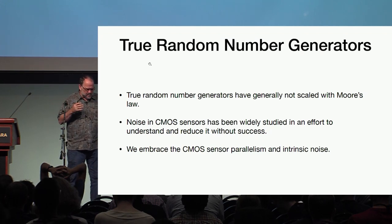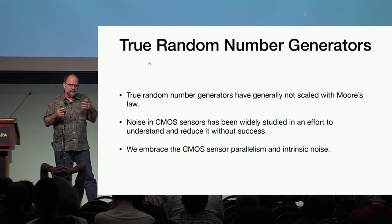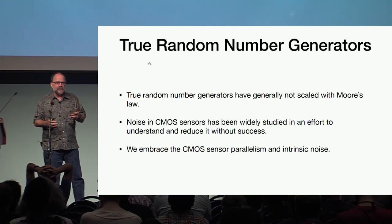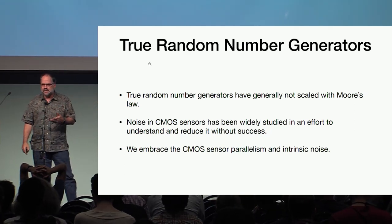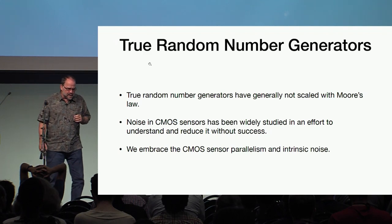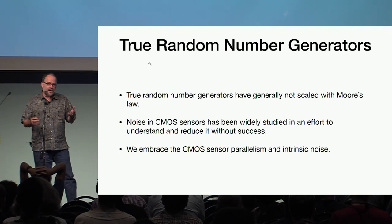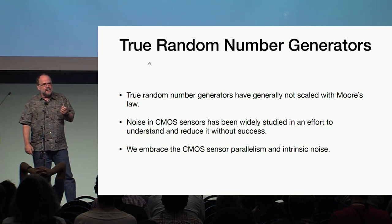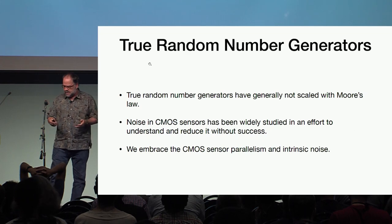We put together the idea of parallelized random number generators with the fact that the noise in CMOS sensors — image sensors like your camera sensors — has been widely studied, and nobody's been able to get rid of it other than cooling it down. So the idea is: can we build a gigabit random number generator out of a standard CMOS sensor?